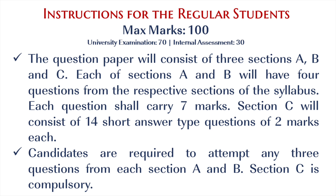The question paper will consist of three sections: A, B, and C. Each of sections A and B will have four questions from the respective sections of the syllabus, and each question shall carry seven marks. Section C will consist of 14 short answer type questions of two marks each. Candidates are required to attempt any three questions from each of sections A and B. Section C is compulsory.